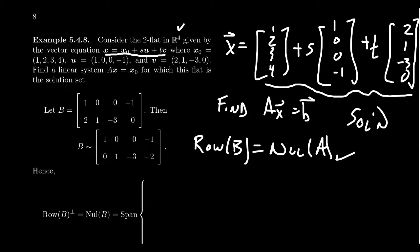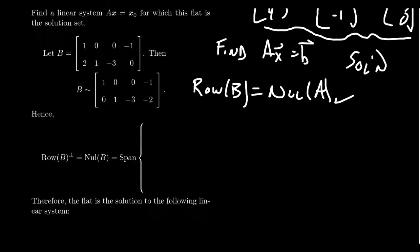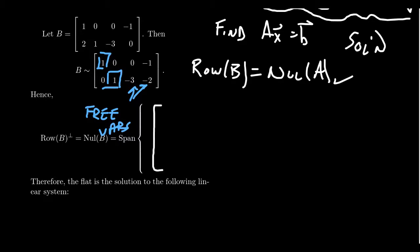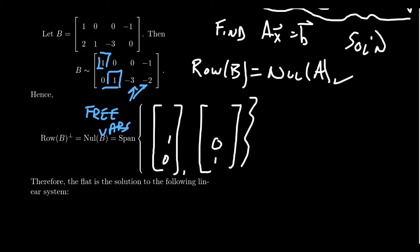So row reduce that matrix B. When you row reduce B, you get pivots in the first and second columns, with free variables in the third and fourth columns. We can build a basis for the null space of B. We'll get a 1 in the third spot for the first basis vector, and a 1 in the fourth spot for the second. Looking at the first row, you take the negations and get 0 and 1; looking at the second row, you get 3 and 2. This gives us a basis for the null space of B.